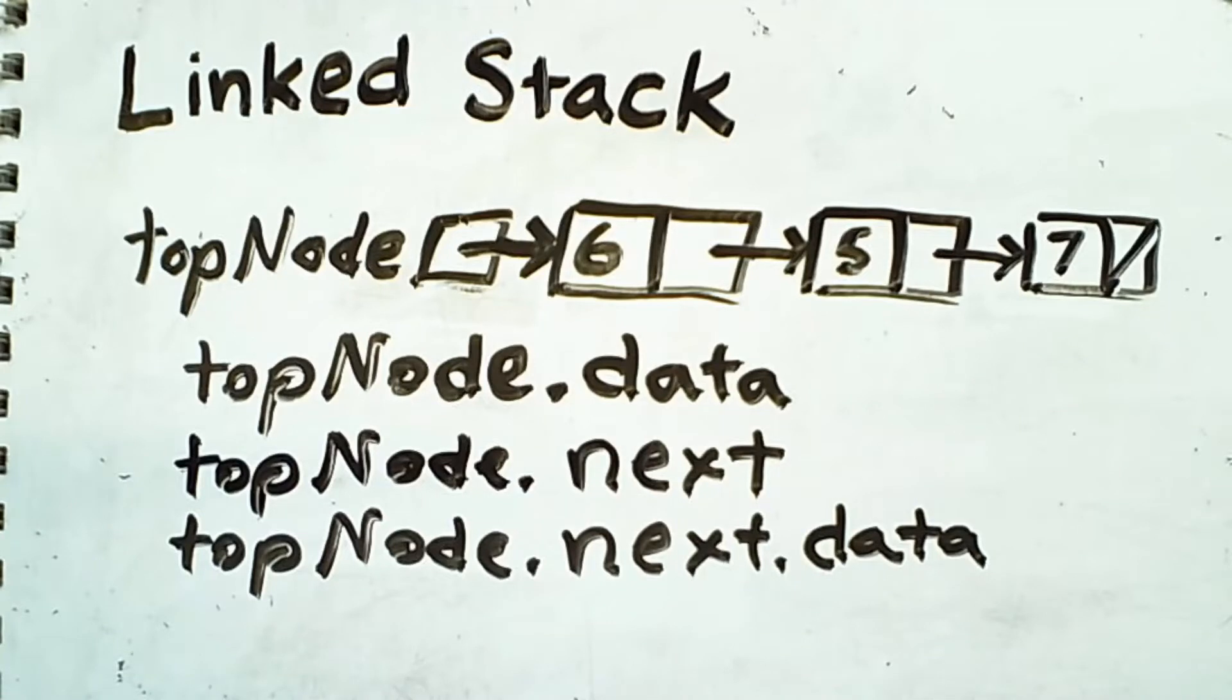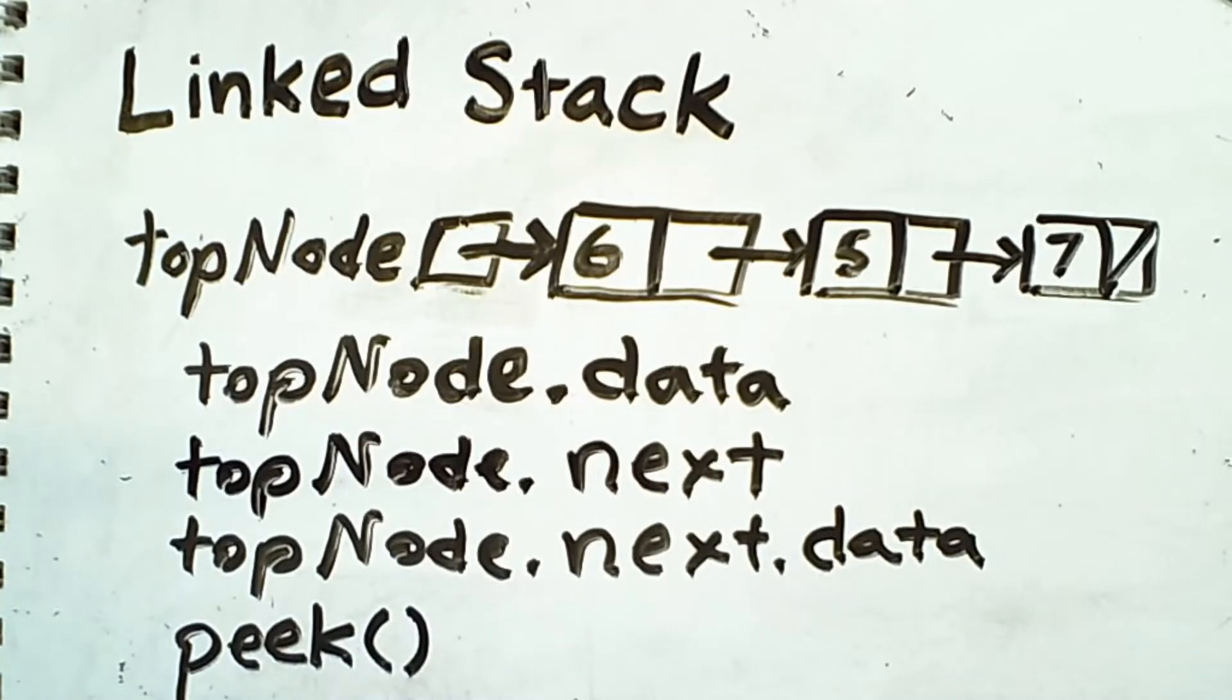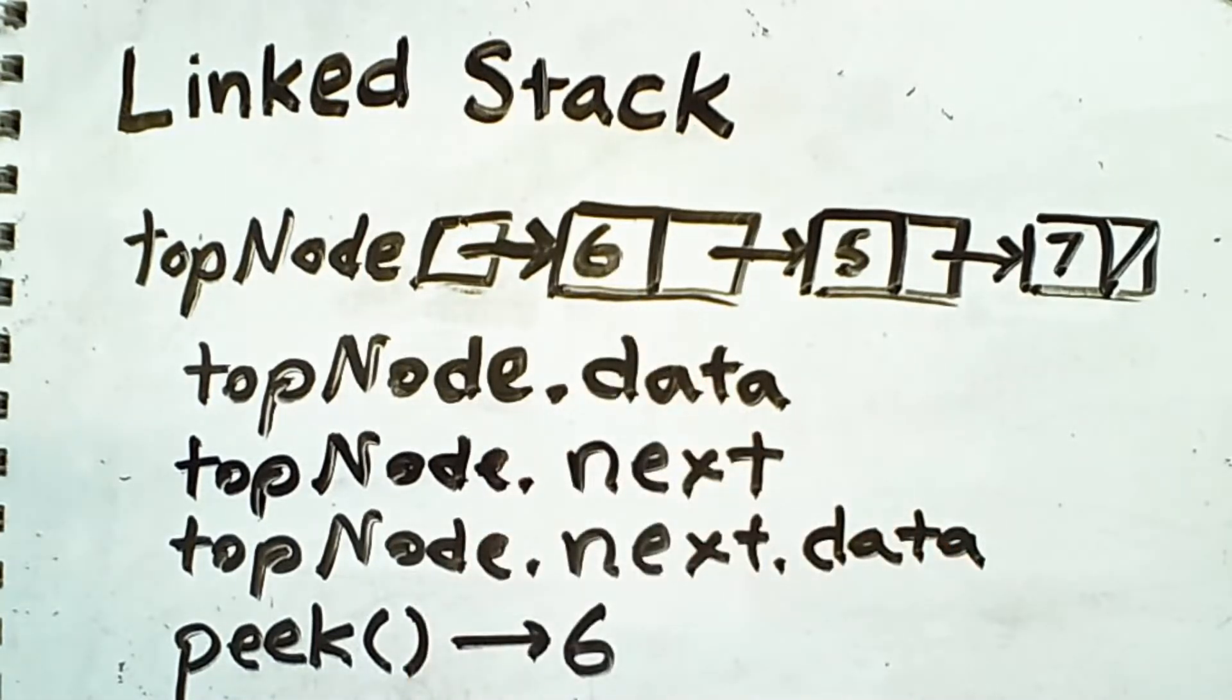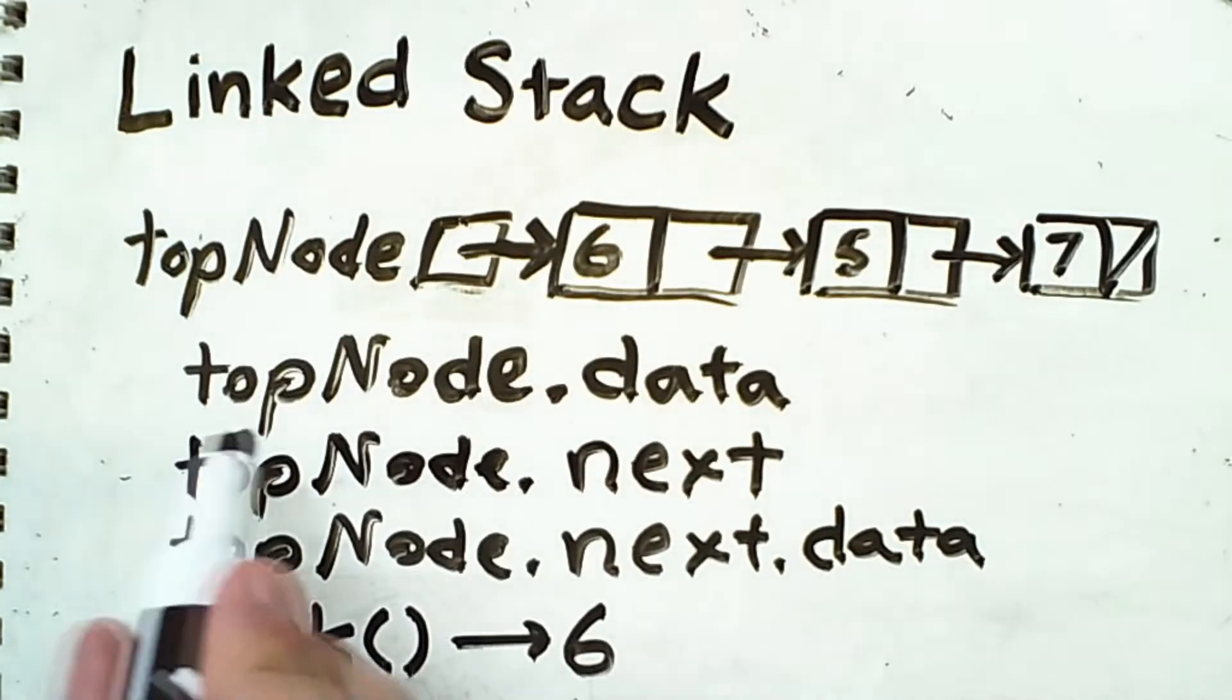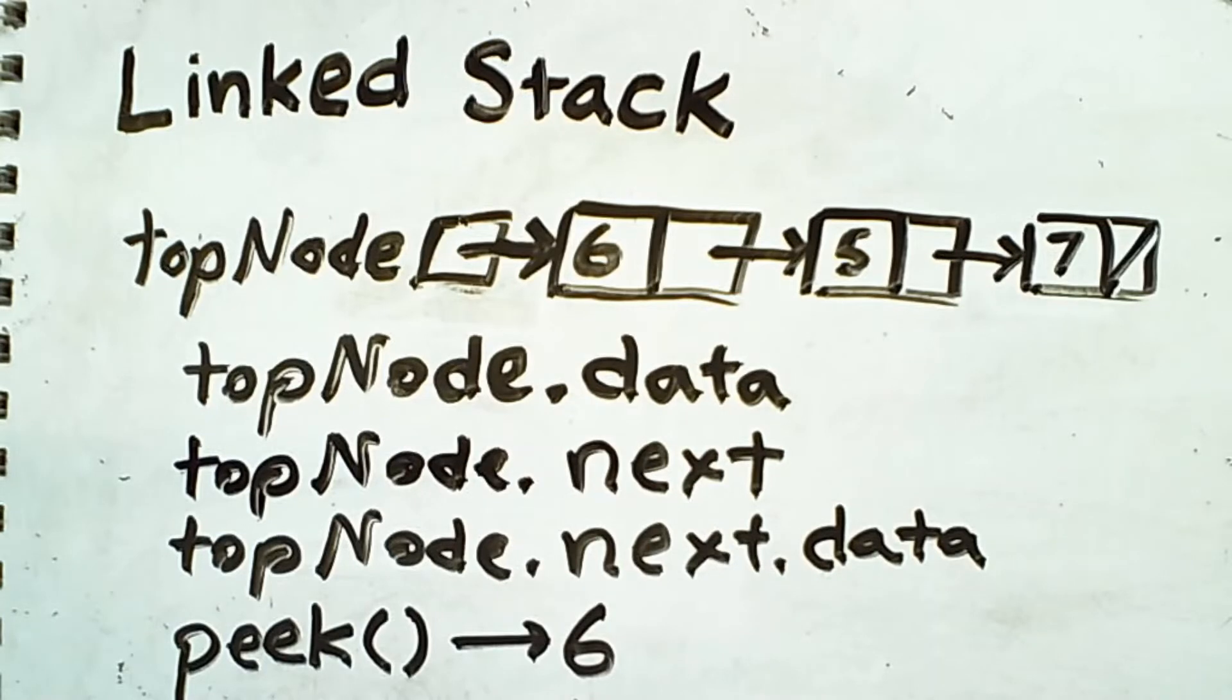Taking all this into consideration, if I want to define a peak operation, the value that should be returned by this is 6 because 6 is a value on top of the stack. So in the case of how I define peak, all I'm going to do is return top node dot data, because top node will always point to the node on top of the stack and the data in that node will always be what I want to return.